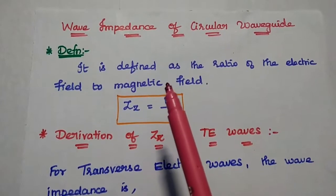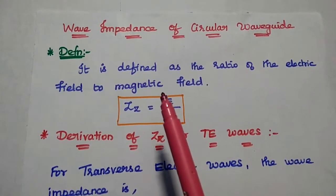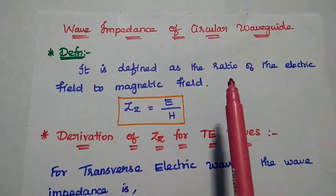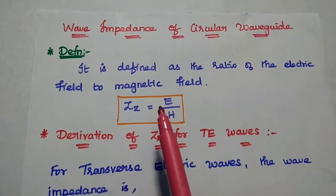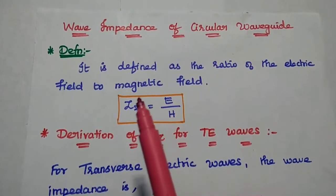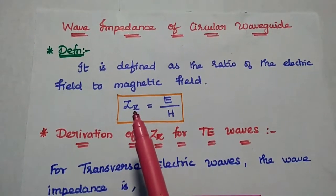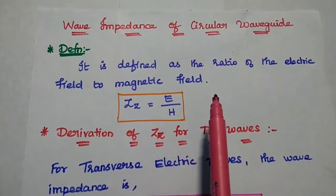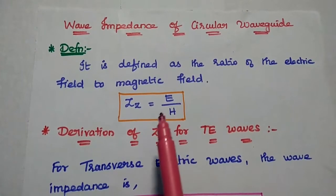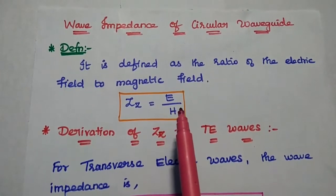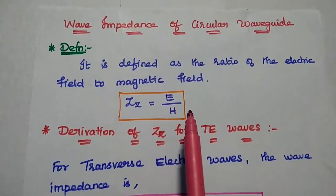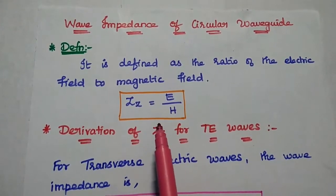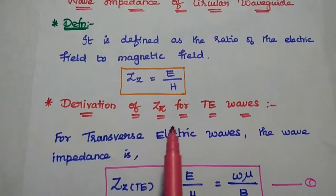Dear students, now we are going to discuss wave impedance of circular waveguide. Let's start with the definition. In general, the wave impedance is defined as the ratio of the electric field to the magnetic field in the waveguide. It is given as Z is equal to E by H.